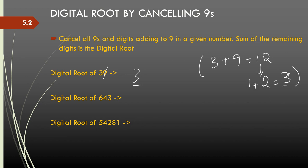Similarly, just take out all the 9s or digits adding to 9 in the given number. In 643, 6 and 3 add to 9, so I cancel out 6 and 3, and the digital root is 4. If I have a bigger number like 54281, 5 and 4 add to 9, and 8 and 1 add to 9, so the digital root is 2. This works for any however large the number is.